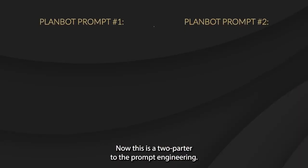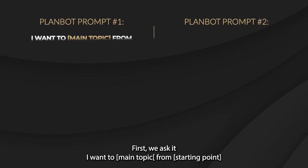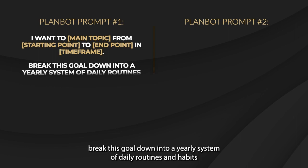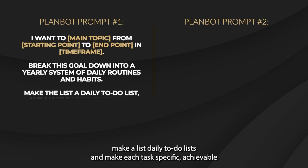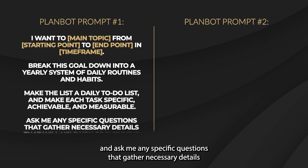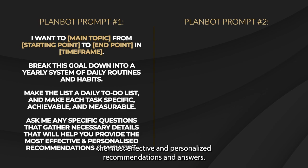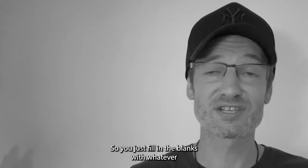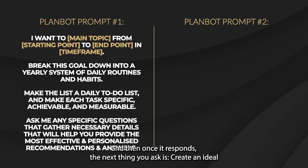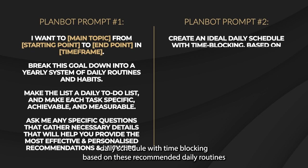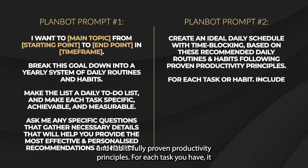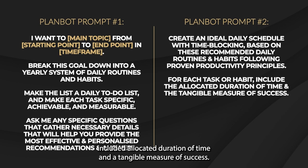This is a two-parter to the prompt engineering. First, we ask it: 'I want to [main topic] from [starting point] to [end point] in [time frame]. Break this goal down into a yearly system of daily routines and habits. Make a list of daily to-do lists and make each task specific, achievable, and measurable. Ask me any specific questions that gather necessary details to help you provide the most effective and personalized recommendations.' Then once it responds, you ask: 'Create an ideal daily schedule with time blocking based on these recommended daily routines and habits following proven productivity principles. For each task or habit, include an allocated duration of time and a tangible measure of success.'